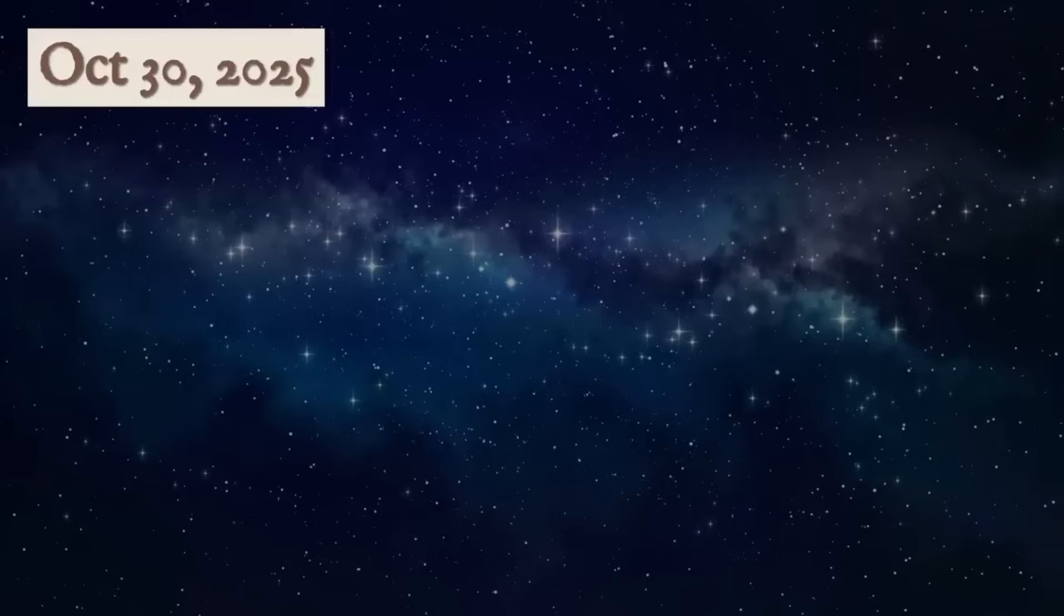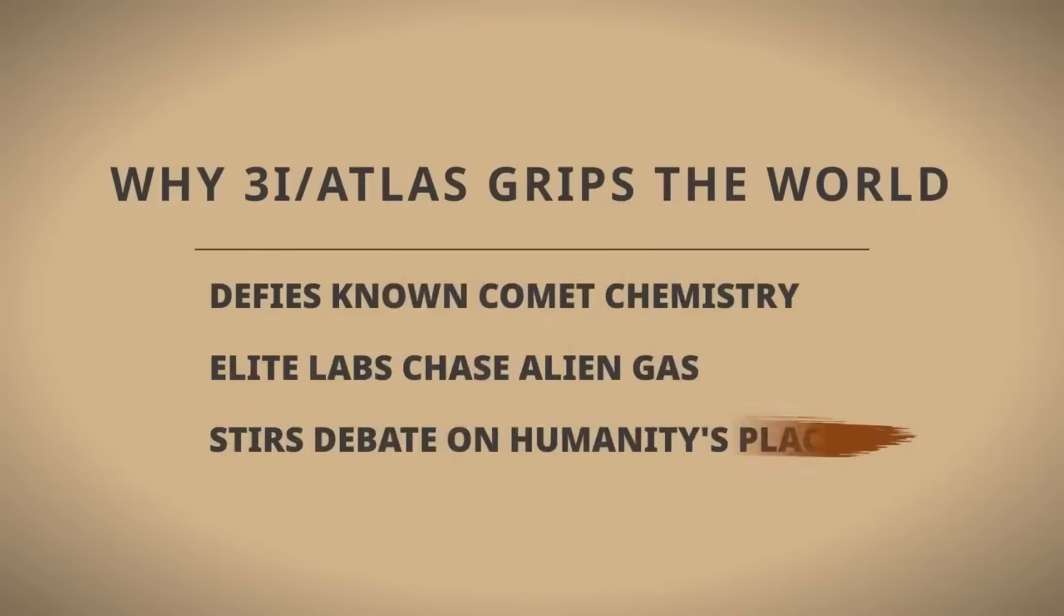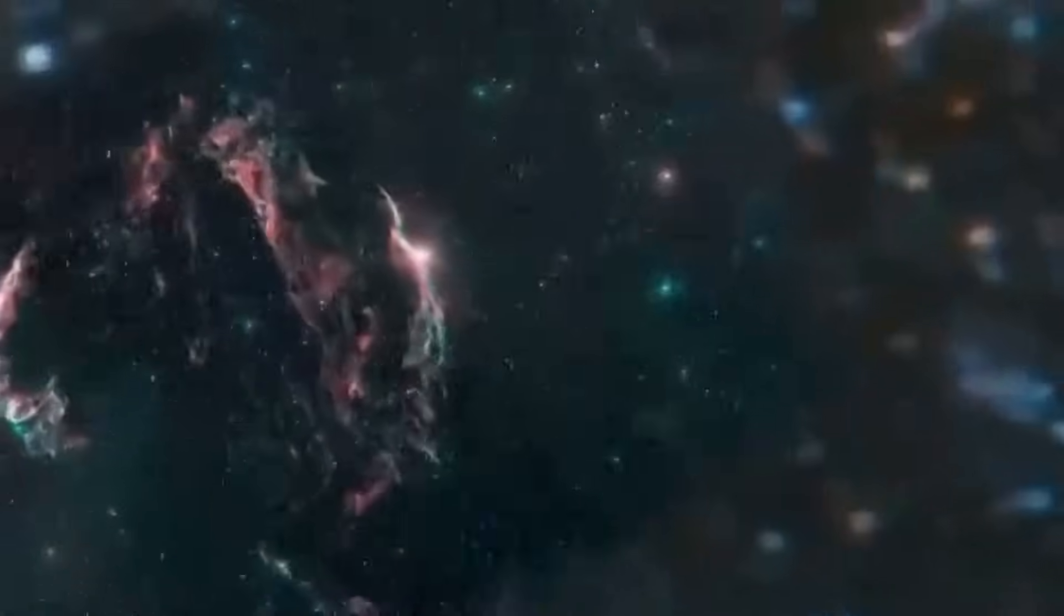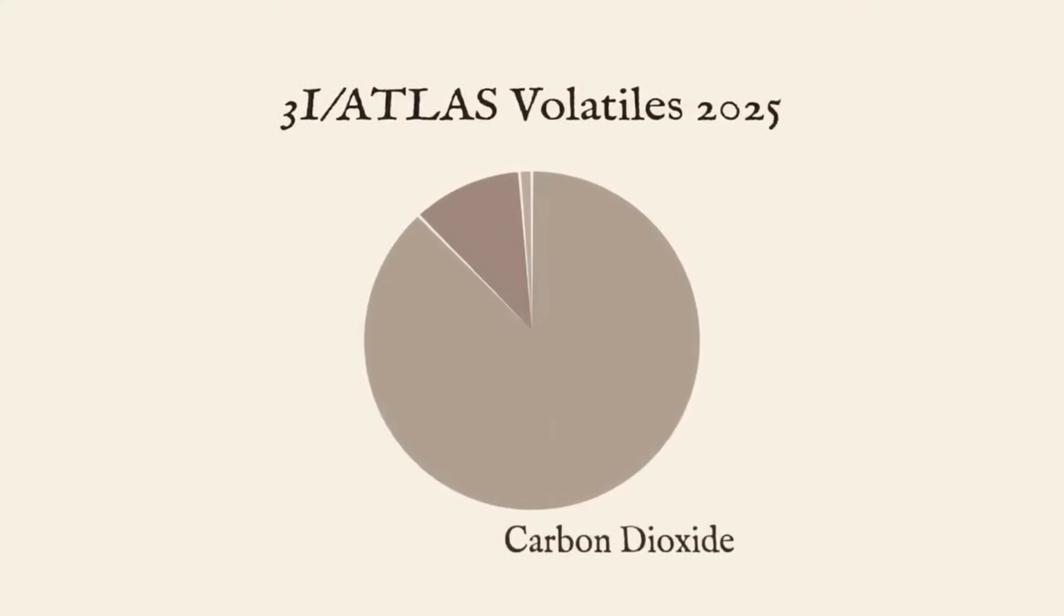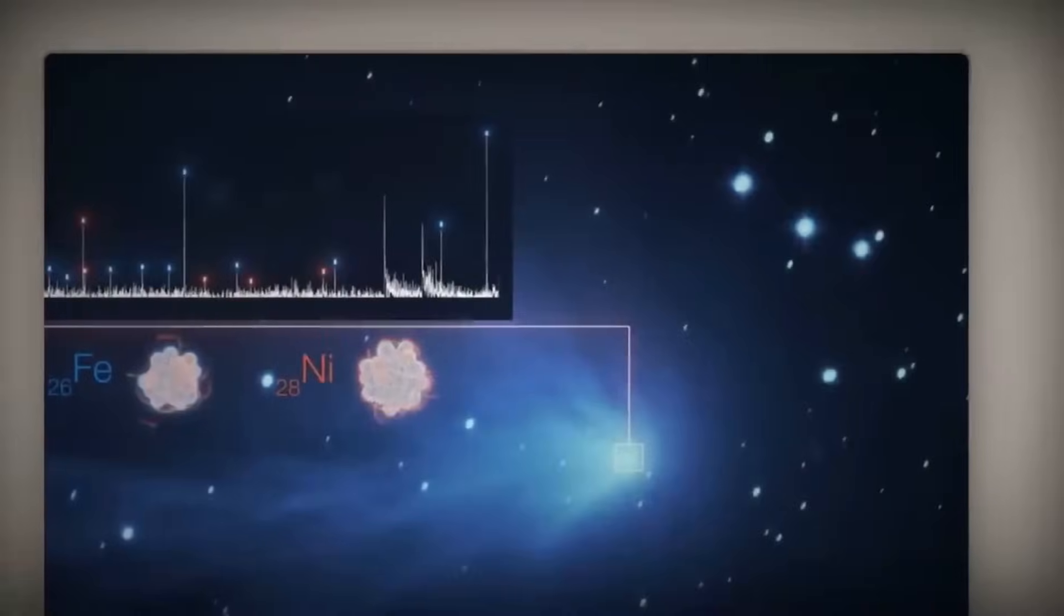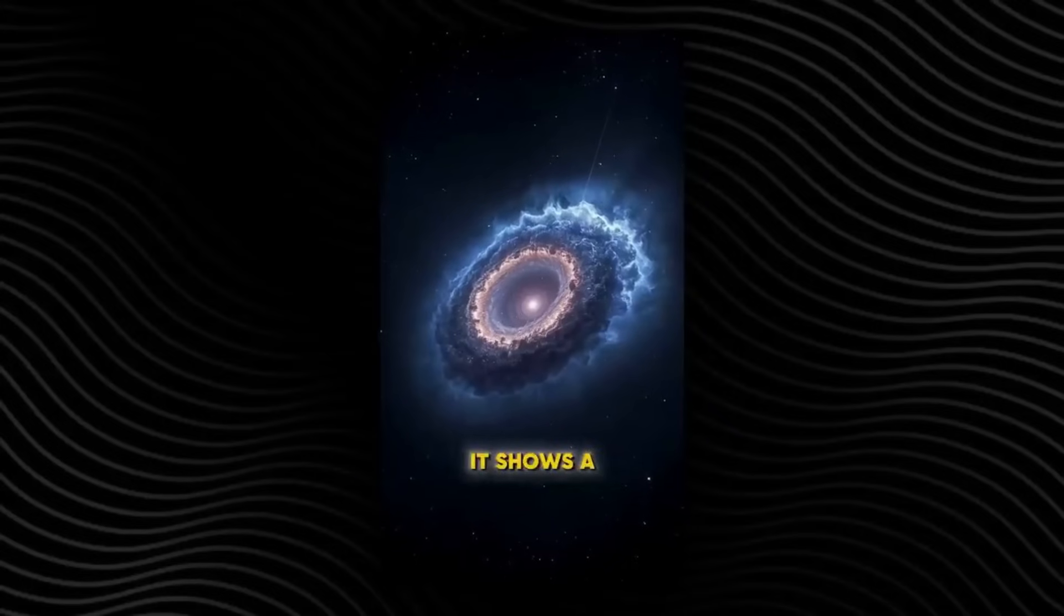As I'm recording this video, the mystery of 3I/Atlas remains unsolved. The comet continues its journey through our solar system, releasing its strange mixture of gases and defying explanation. Scientists continue their observations, hoping that each new measurement will provide the key to understanding what they're seeing. The next major observing window opens in late 2025, when the comet will be at its closest approach to the sun. The James Webb Space Telescope and ground-based observatories around the world are preparing to gather as much data as possible during this critical time. Every wavelength of light, every spectral line, every tiny detail could hold a clue that finally explains the mystery.